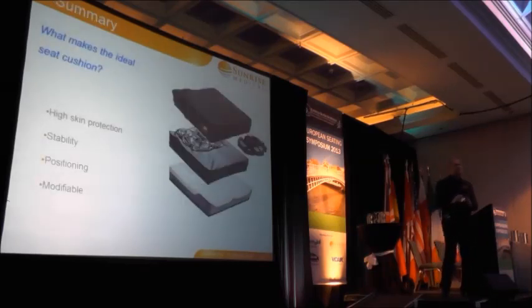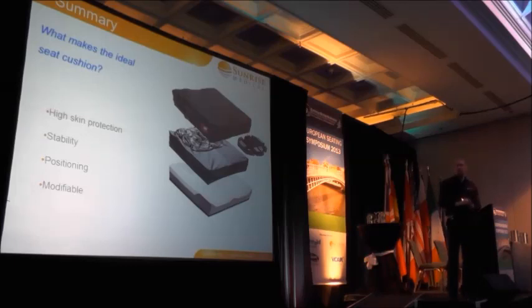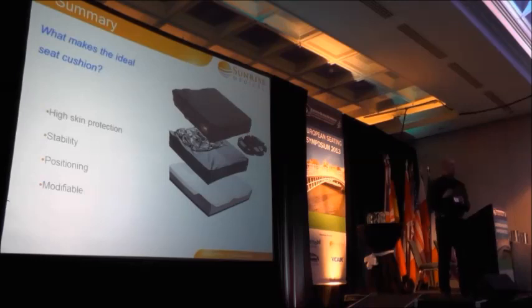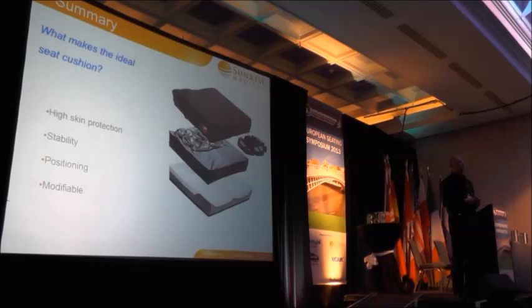In summary, what makes the ideal seat cushion? As long as a cushion has all of those things on the wheel — high skin protection, stability, positioning, and the ability to be modifiable — it's going in the right direction. I do think there is such a thing as an ideal seat cushion, and from a J perspective, we're certainly going down that road. Thank you very much.